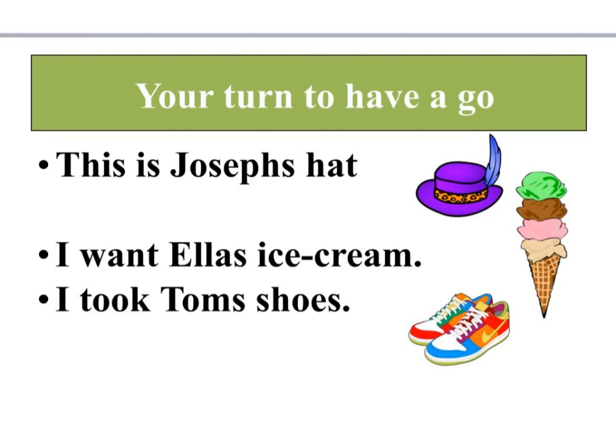Now check you've done this correctly. This is Joseph's hat — the hat belongs to Joseph, therefore the apostrophe goes in front of the 's' for Joseph. I want Ella's ice cream — who owns the ice cream? Ella. The apostrophe goes on Ella's. I took Tom's shoes — the shoes belong to Tom, so the apostrophe goes on Tom, who's the owner.